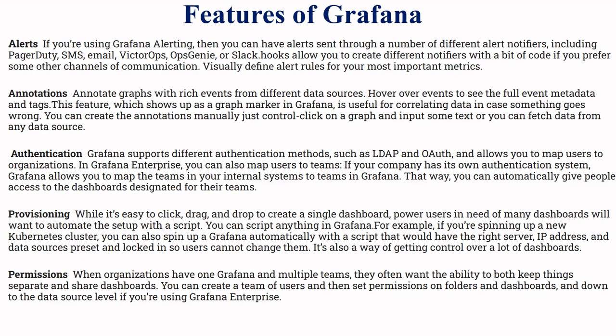Next is annotation. Annotation annotates graphs with rich event data from different data sources. To see the full event metadata and tags, these markers show up on the graph in Grafana and are useful for correlating data. When something goes wrong, you can create annotations manually by control-clicking on a graph and inputting text. You can fetch data from any data source.